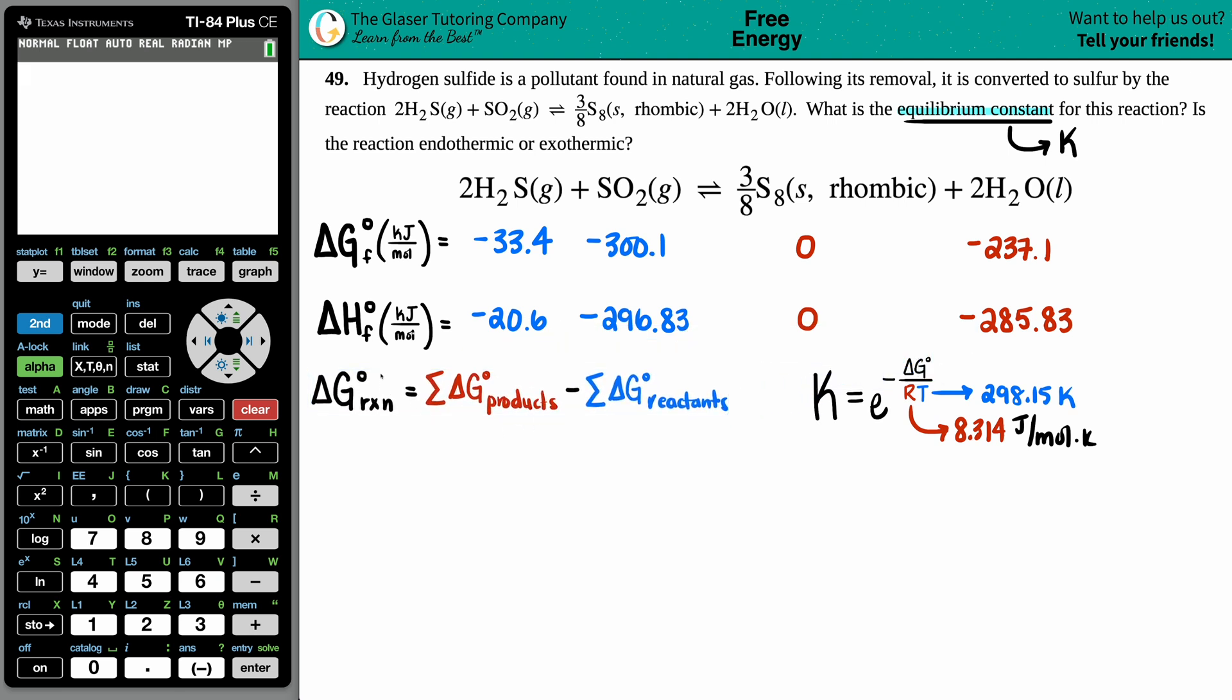ΔG of the whole reaction equals the sum of all the products minus the sum of all the reactants. The values you found in the back of the book are only for one mole of your substance. Look at the balanced equation: there were two H₂S's, one SO₂, three-eighths S₈, and two H₂O's. For each value you're going to multiply by that number. I'm going to multiply the -33.4 times by 2, -300.1 times by 1, zero times by 3/8, and -237.1 multiply by 2.